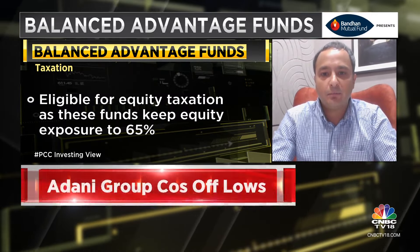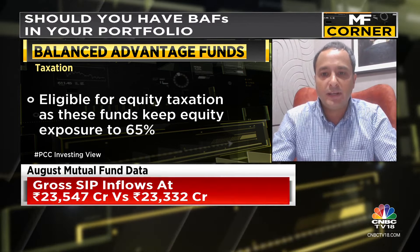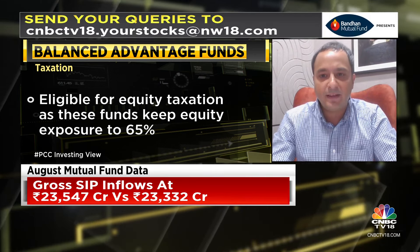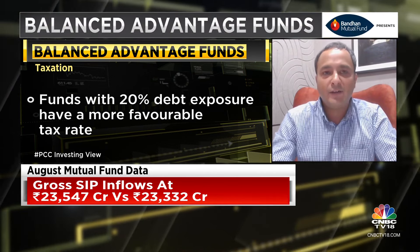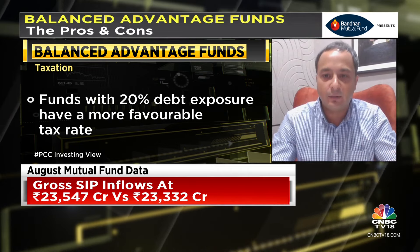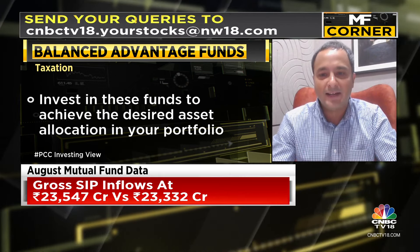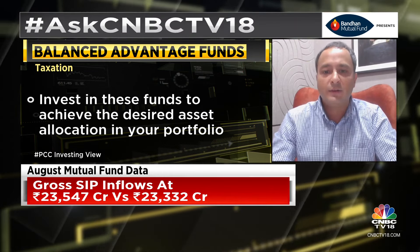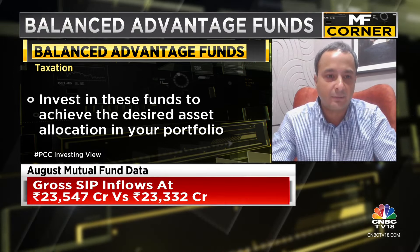A balanced advantage fund with around 60% net equity exposure might actually have 80% in equity and 20% in debt, but use arbitrage funds or derivatives to bring the net equity exposure down to 60%. This means you still get equity tax treatment. Even the 20% debt component gets a very favourable tax rate, because if you were to unbundle and invest in equity and debt separately, the debt component would be taxed at your tax slab. But inside a balanced advantage product, you get taxed only at equity rates — 12.5% and 20%. As a result, many investors are now strategically using balanced advantage funds to achieve an optimum asset allocation in their portfolio.